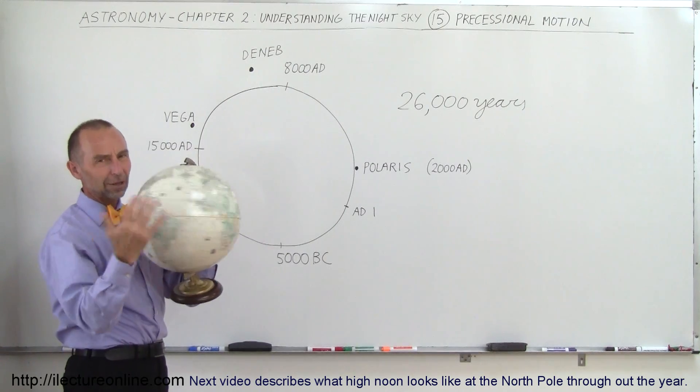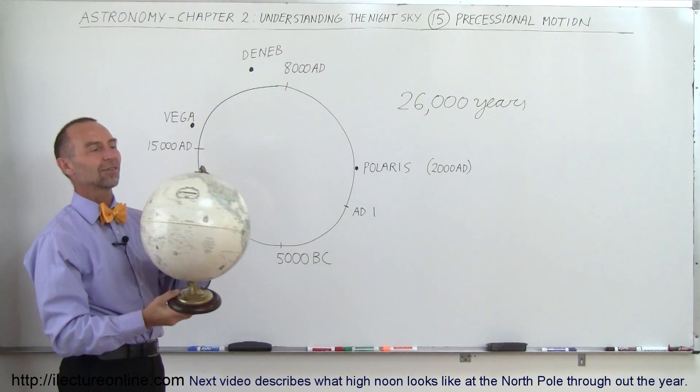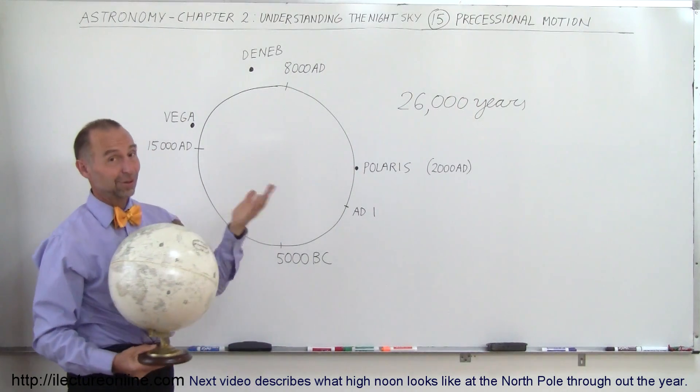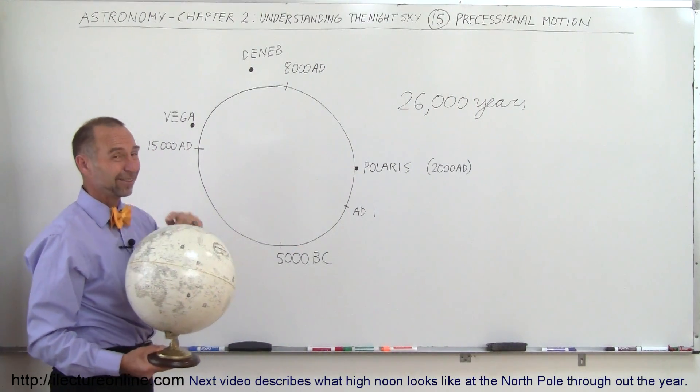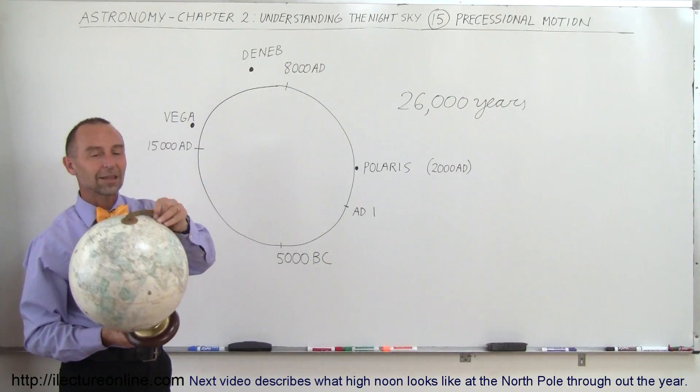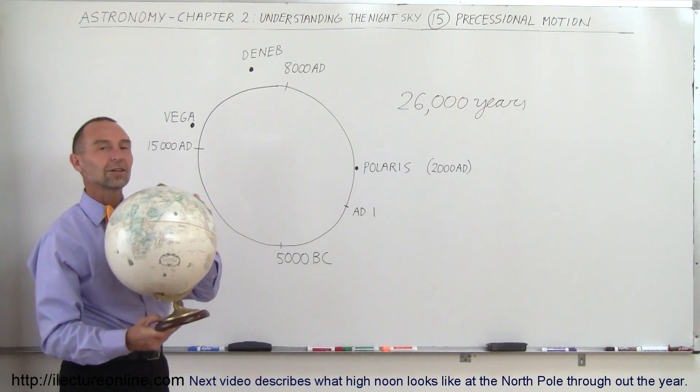So of course, the Earth will then rotate on its axis many thousands of times in the very same period. How many times? 26,000 times 365 days in a year. That's a lot of rotations on the Earth's axis, and during that time it will precess one single time.